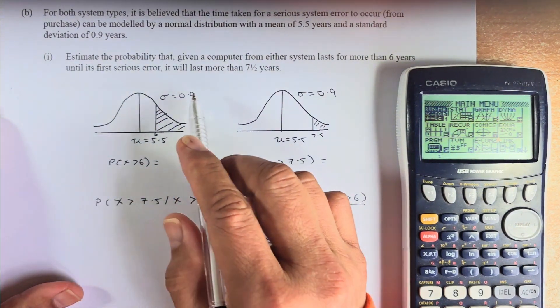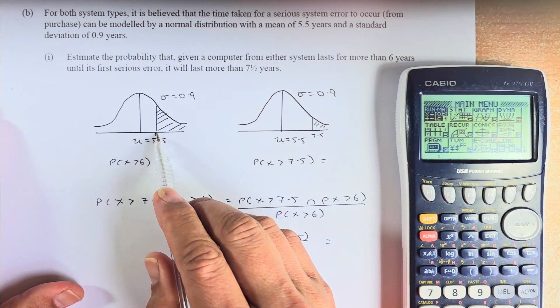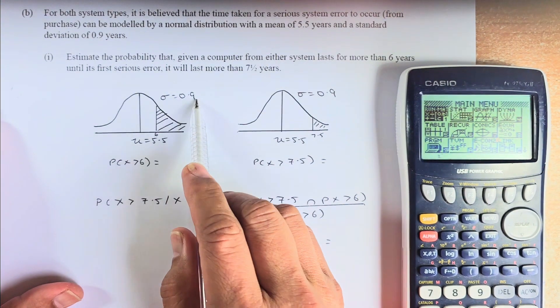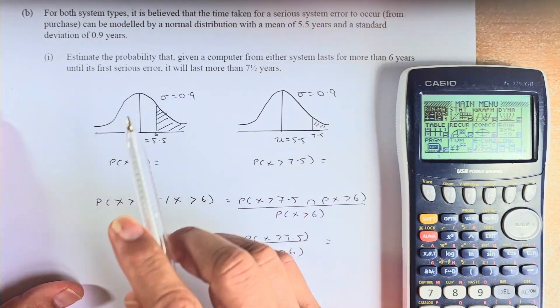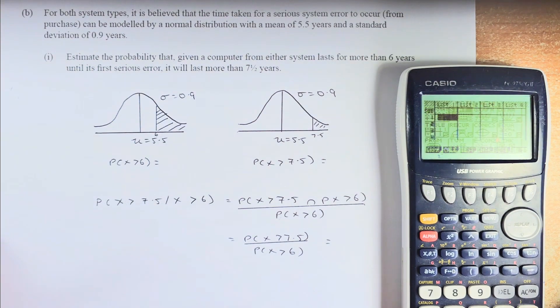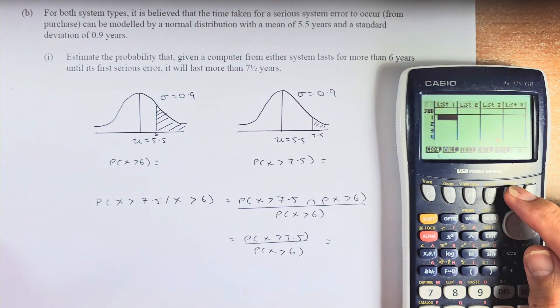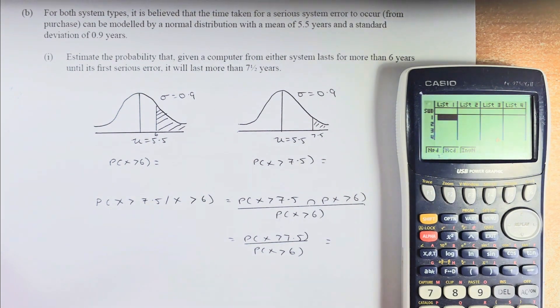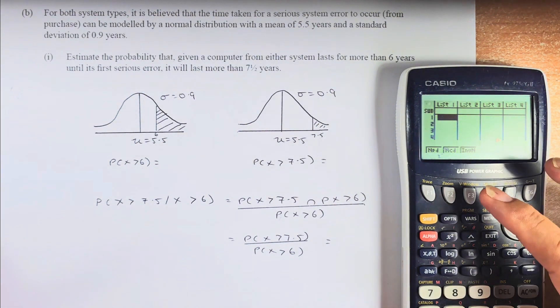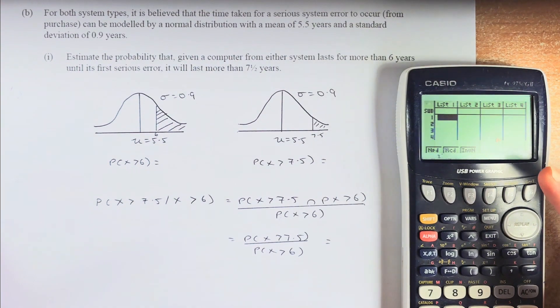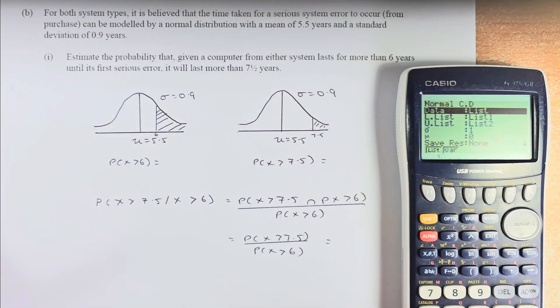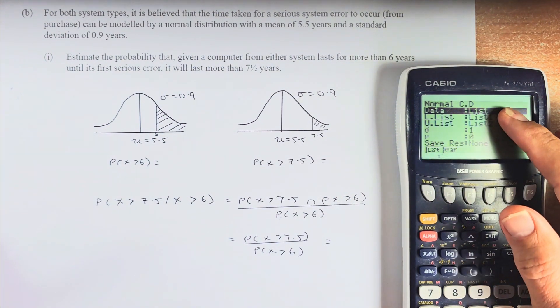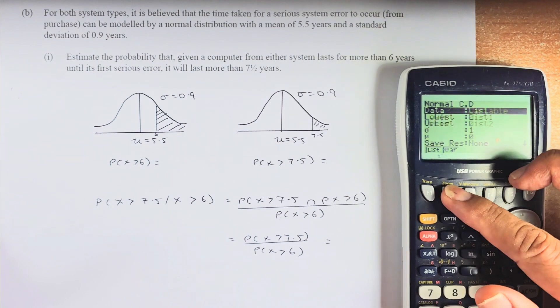Now we are going to solve this. First, we are going to put in the calculator to solve what is greater than 6. The mean is 5.5 and the standard deviation is 0.9. So now we are going to go to statistics. Press the statistics button, go to distribution, F5. Normal, F1. Remember, normal is always NCD. So if you are calculating probability using normal, it is always NCD. So you are going to F2. It always has to be variable, so you need to change the list to variable. So press F2 again.